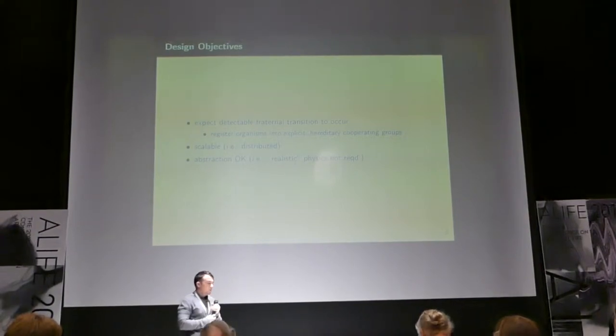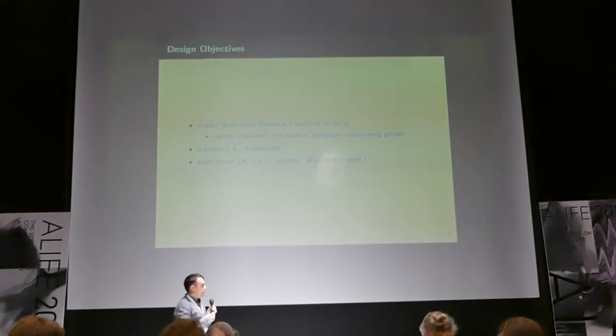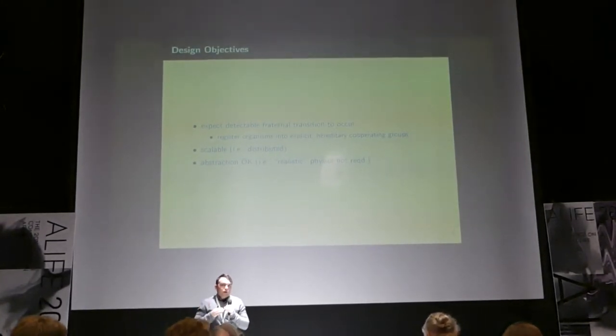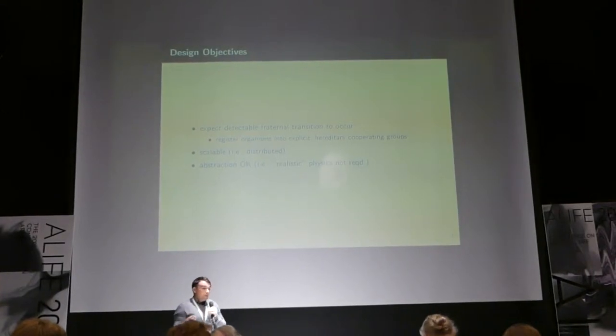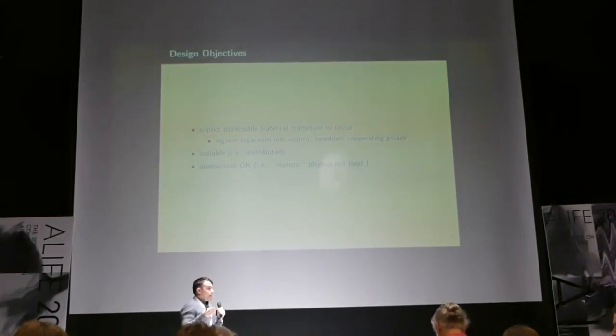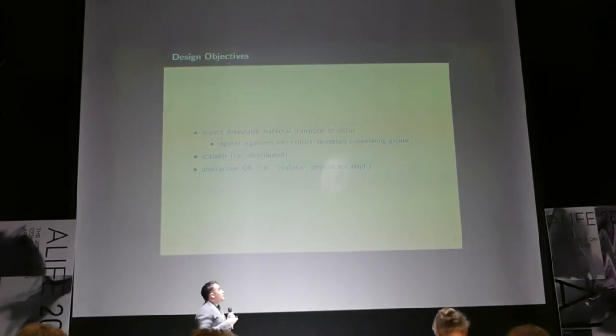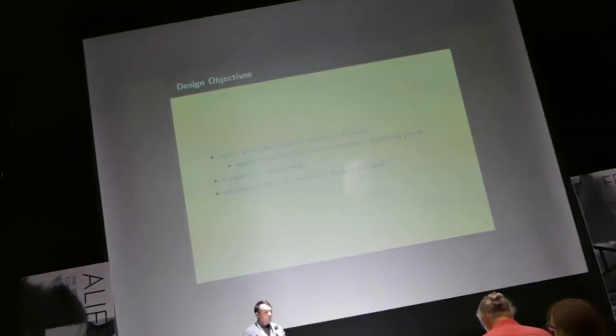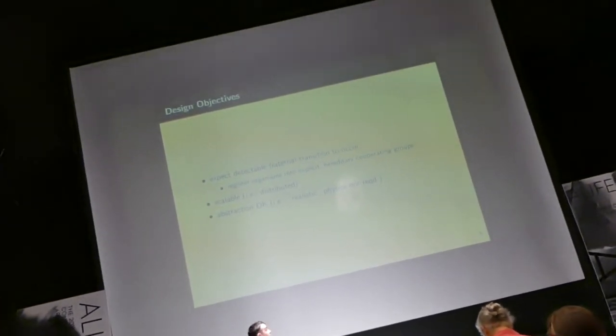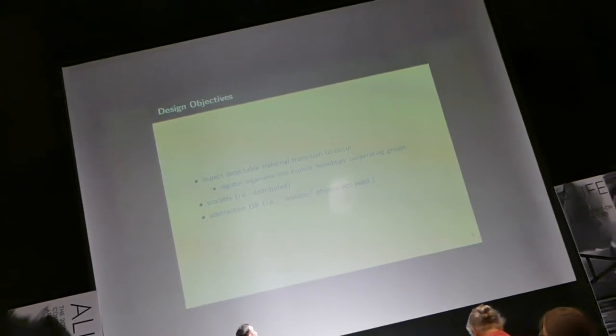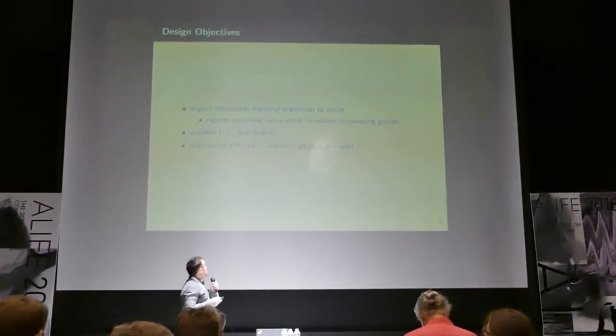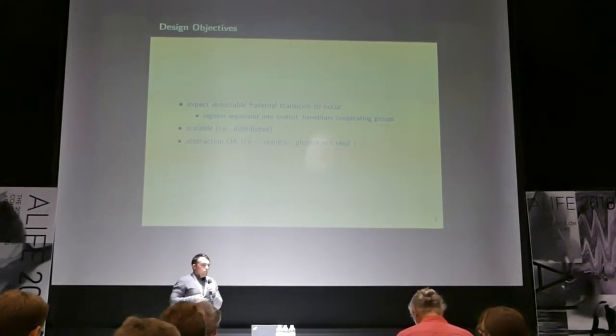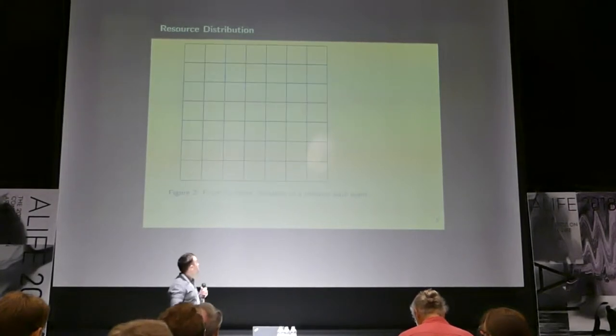So, when we were designing our model, we had these key priorities. We want transitions to occur reliably and in a way that's easy to detect. And so, our main approach to accomplishing this is registering organisms into explicit, hereditarily defined cooperating groups. And we're also interested in having our model be scalable and it can be abstract.